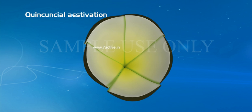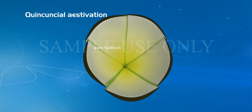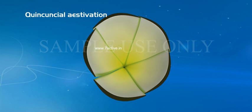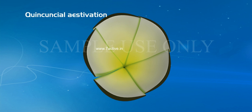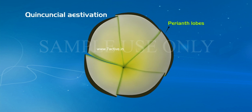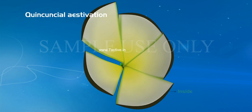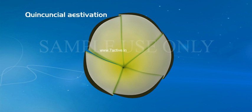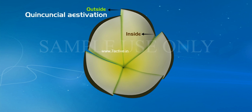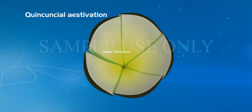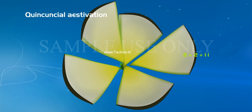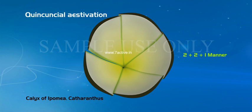Quincuncial Estivation: It is also a twisted type of estivation. It shows five perianth lobes in which two are present completely outside, two are present completely inside, and the fifth perianth member has one margin inside and one margin outside. The perianth lobes appear in a two plus two plus one manner. Example: Calyx of Ipomoea and Catharanthus.